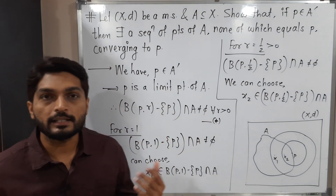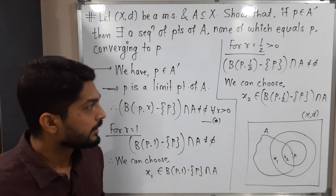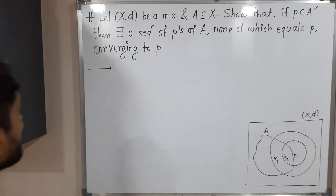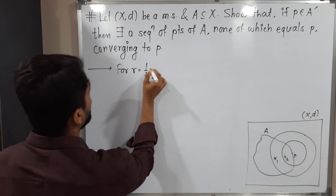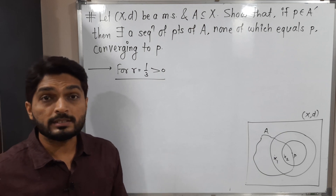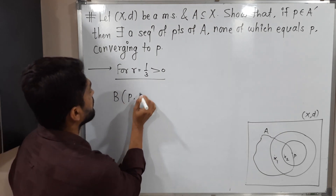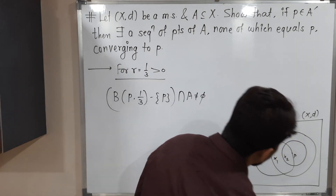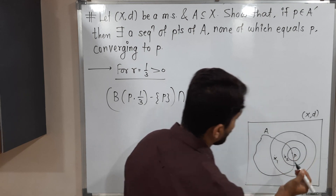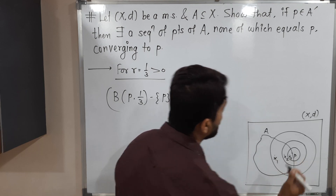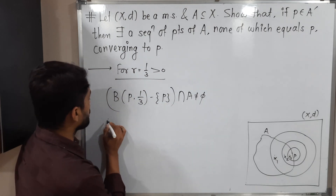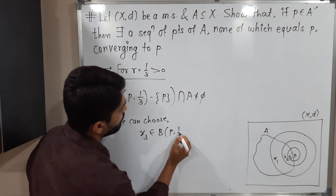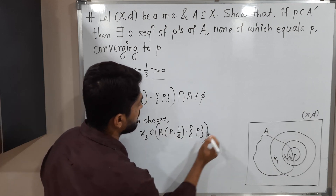We can repeat the same thing for R equal to 1/3 as well, since 1/3 is greater than 0. For R equal to 1/3, from our condition we get B(P, 1/3) minus singleton {P}, intersection A, is not equal to empty set. We are reducing R to 1/3, so we get a comparatively small ball, but again the intersection is non-empty. So we can select one more point and call it X3. Therefore we can choose X3 belonging to B(P, 1/3) minus singleton {P}, intersection A.